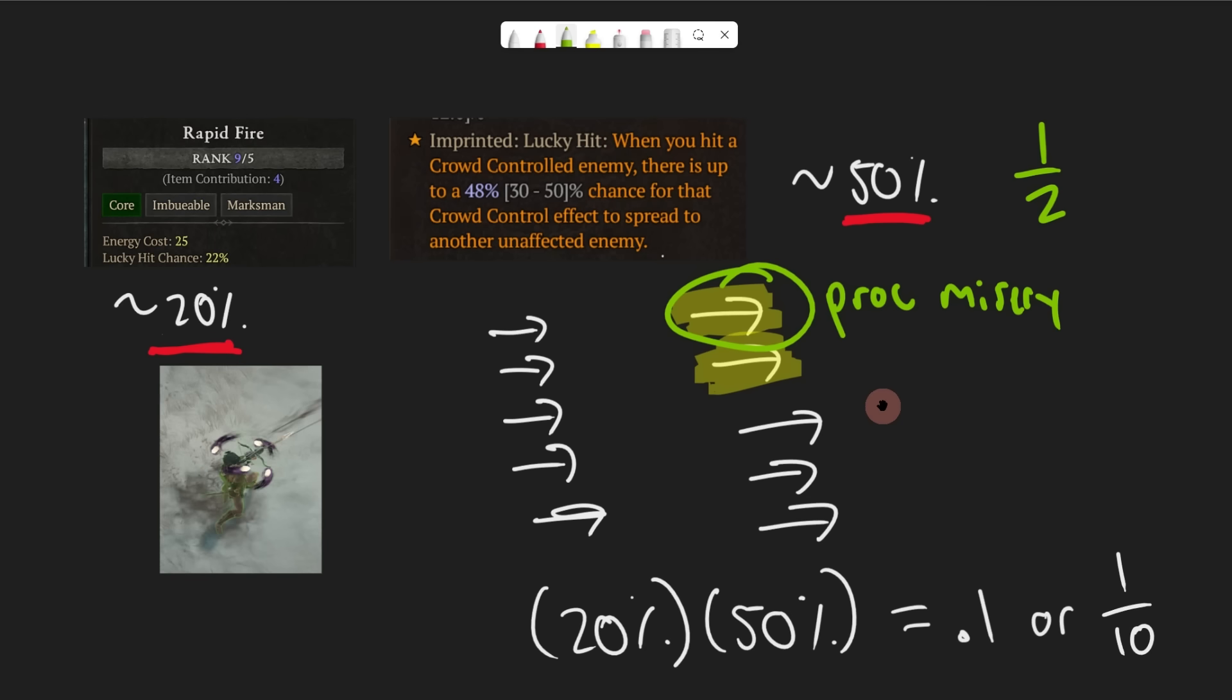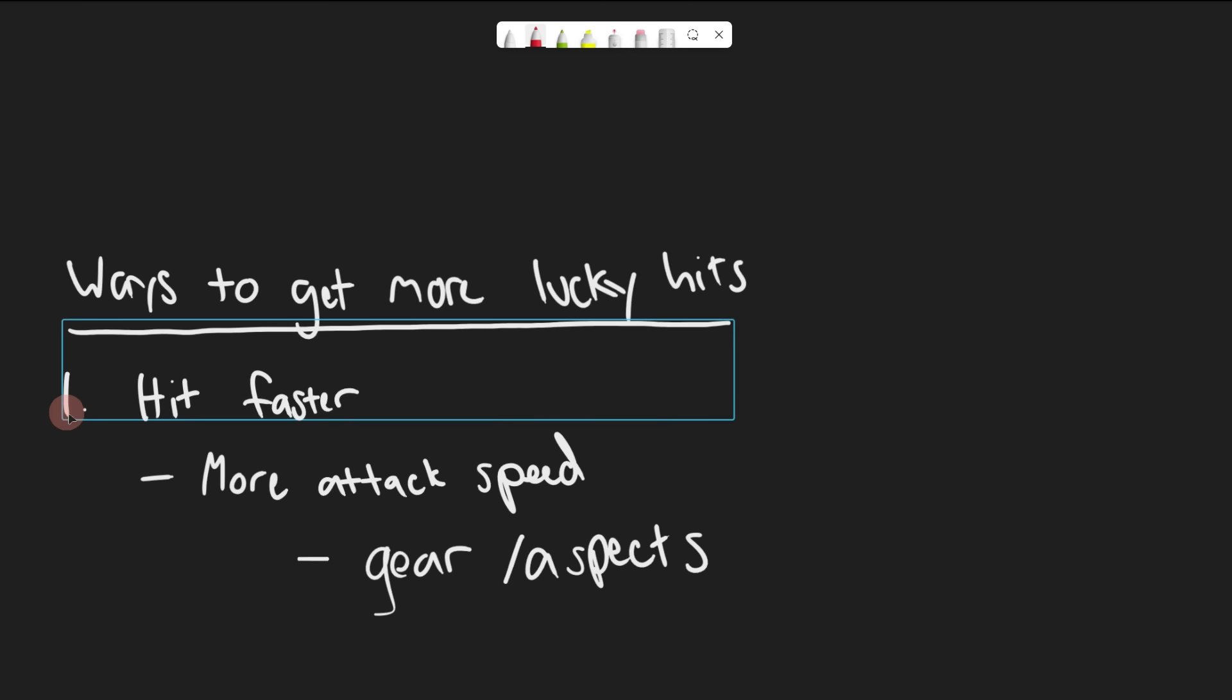Now let's say you want to create a build that really relies on getting lots of Lucky Hits. There are some things that you can do and things that you can look for in order to increase how many Lucky Hits you are getting, and the answer is yes. Ways to get more Lucky Hits. So first off, hit faster. If you're attacking more often, well, then you're going to get more Lucky Hits more often, right? We can look for adding Attack Speed to our gear, so like our gloves, for example, or see if there are Aspects available for your class, like the Rapid Aspect, that will allow you to get off more attacks per second, or you can even look at, for example, different weapons have different Attack Speeds. So for example, bows attack faster than Crossbows.